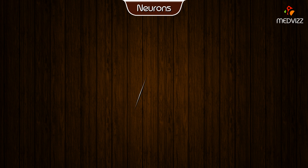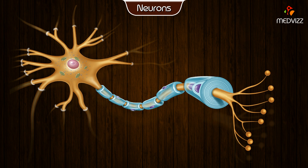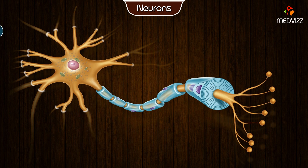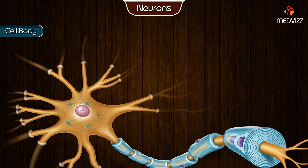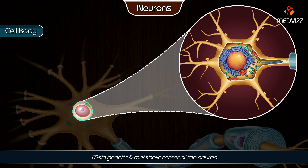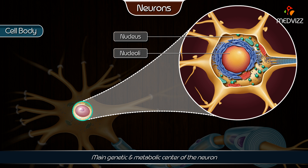The typical neuron consists of three main cellular compartments: a cell body, a variable number of processes that extend from the soma called dendrites, and an axon. The cell body is the main genetic and metabolic center of the neuron, and it consists of the nucleus and nucleoli.